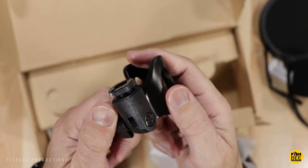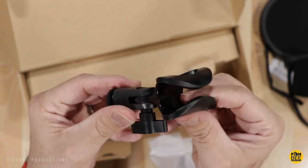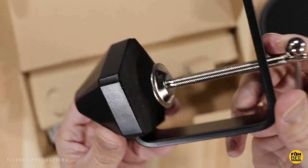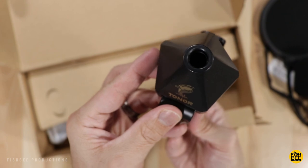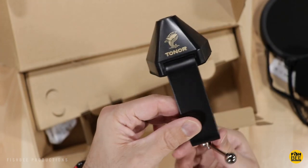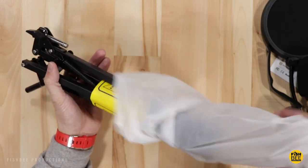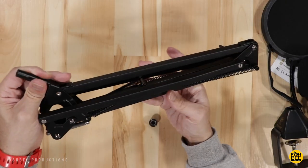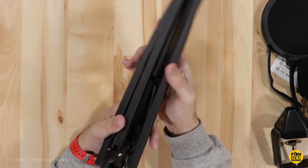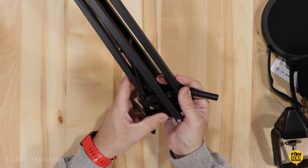It also comes with a little plastic mount, your desk clamp which does have some foam material there so it doesn't move around. Okay, so yeah this definitely looks a little bit heavier duty than some of the other cheap boom arms that I've seen.